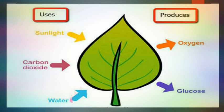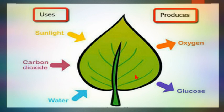Water enters the leaf through roots and stem by means of xylem. Carbon dioxide is absorbed through stomata present on the leaf. As a result, photosynthesis occurs, food is prepared, and oxygen is released — which is used by us and by plants themselves for respiration.